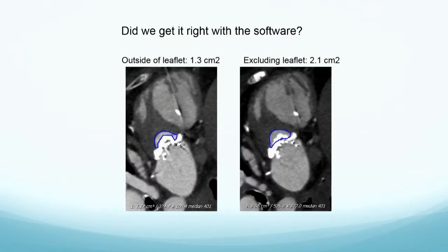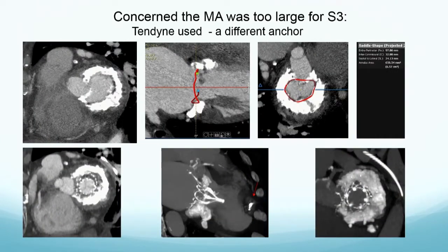On the post-CT, I perimetered the area with the leaflet on the outside and got 1.3 centimeters squared. If you exclude the leaflet, it was essentially what we predicted with the device before. So the leaflet is something we can't be completely certain about. In another case where the mitral annulus was relatively large, placing a Sapien 29 meant we wouldn't be able to oversize. Paul put in a Tendyne valve that has an apical tether, giving it a different anchor, and this worked well.